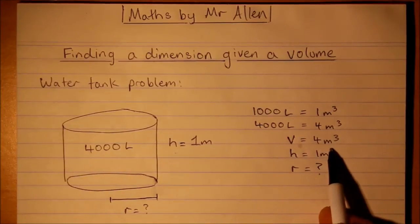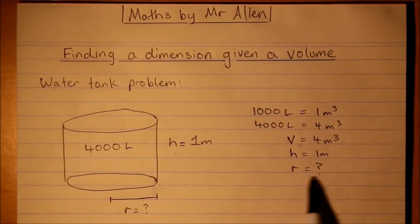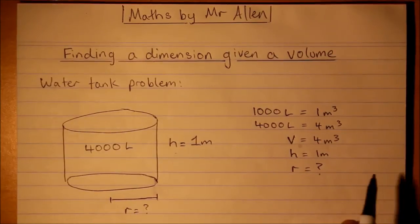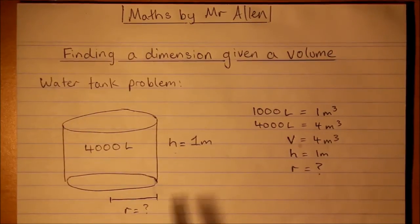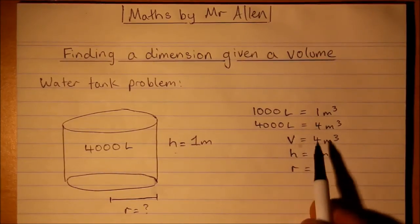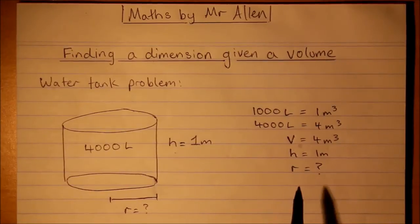We now know the volume is 4 metres cubed but we need to find the radius here which we don't know. Now usually we're used to working the other way which is given a height and a radius to find the volume, so in essence we're just working back to find the radius.